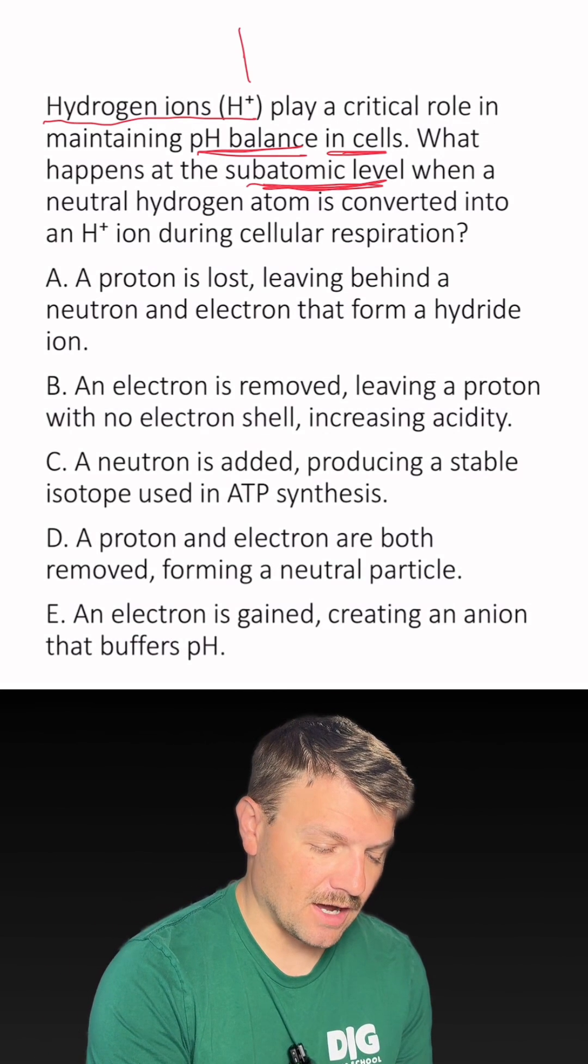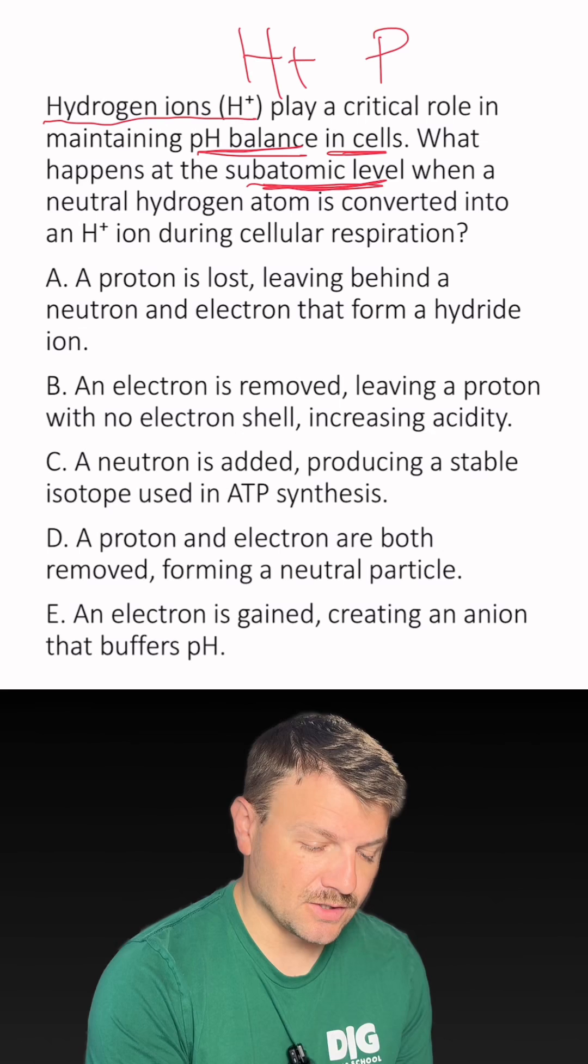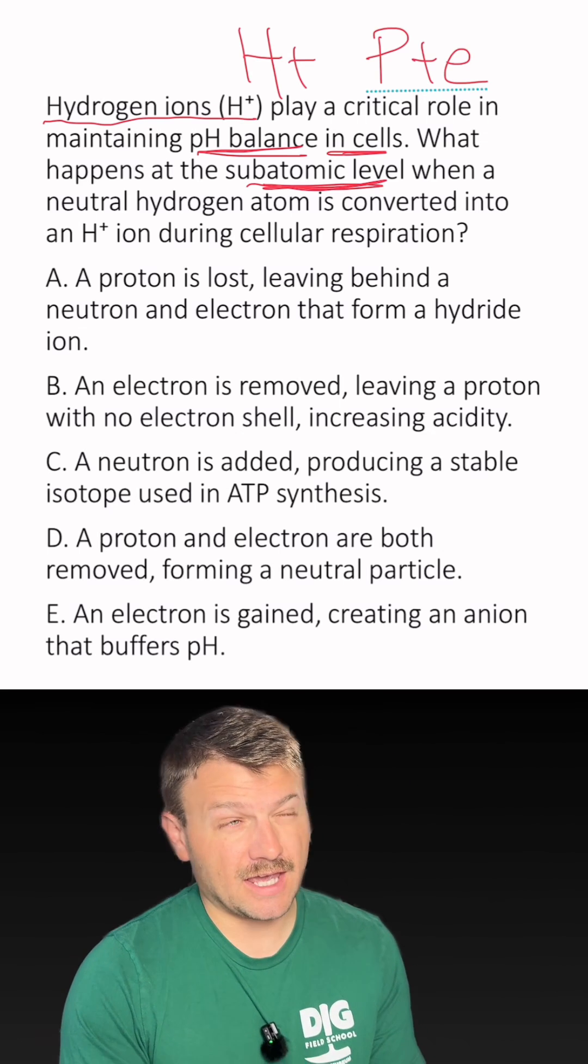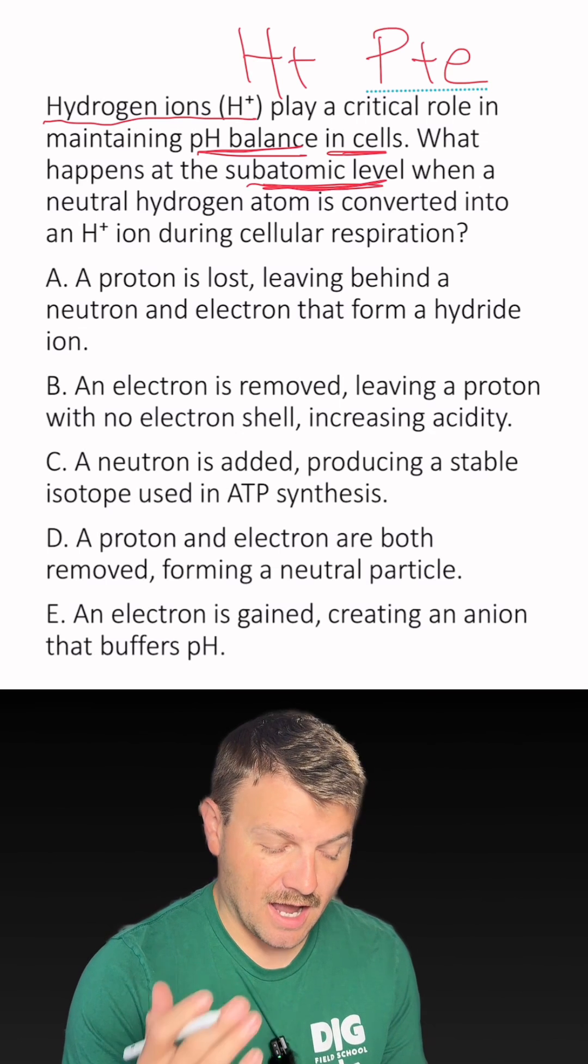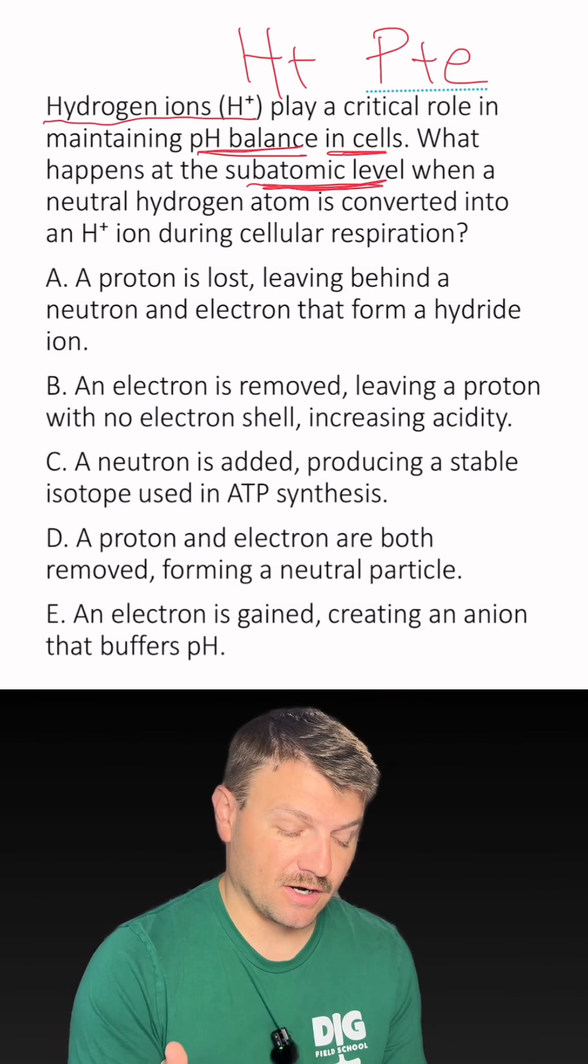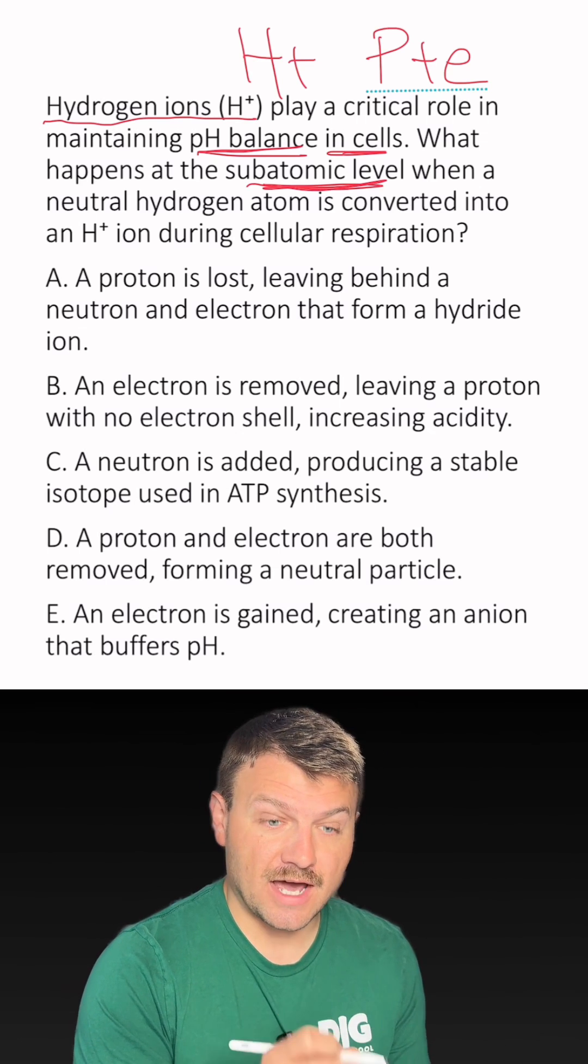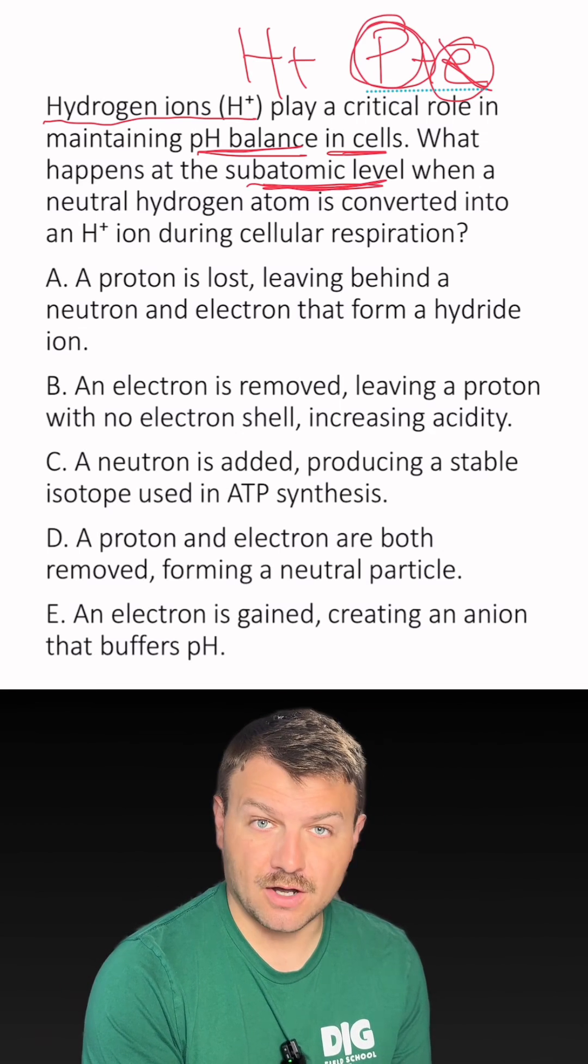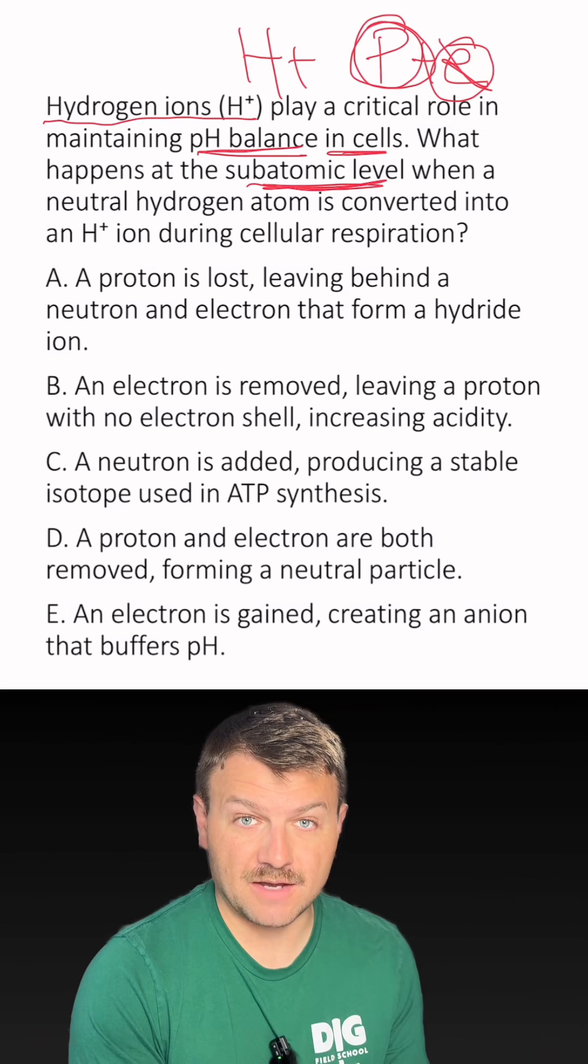Now before I even look at these answers, remember that a hydrogen ion is just a proton plus an electron. Typically they don't have a neutron, however they can, but we're just talking about a hydrogen atom that just has a proton and electron. Whenever the hydrogen atom loses the electron, then it becomes this proton, and that's what hydrogen ions are, it's just a proton.